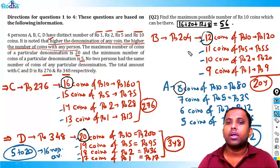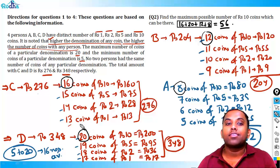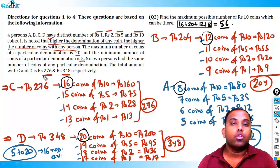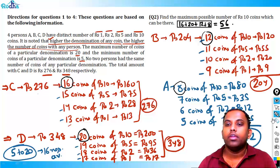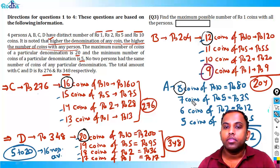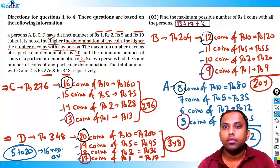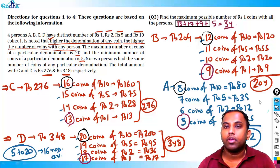This is the maximum possible — we can't increase it further since those are the largest available numbers allotted. Question 3: Find the maximum possible number of rupees 1 coins. A has 5, B has 9, C has 13, D has 17 coins of rupees 1. Total: 5 + 9 + 13 + 17 = 44. Wait — the sum is 34. The answer to Question 3 is 34.